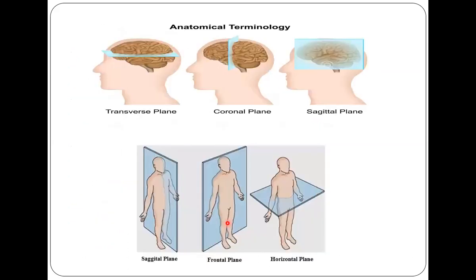We will start with the basics — anatomical terminology. The horizontal plane is parallel to the ground and divides the body into a cranial part and a caudal part. In brain sections, this is the transverse section, also known as the axial section — the axial films we see on CT and MRI. The frontal plane divides the body into anterior and posterior halves; this is the coronal plane, which divides the brain into anterior and posterior halves. Then we have the sagittal plane, which runs in the midline and divides the body into right and left halves.